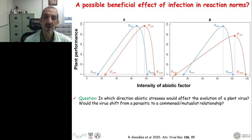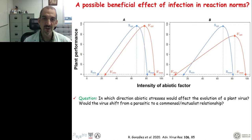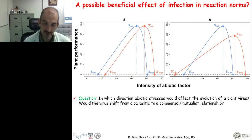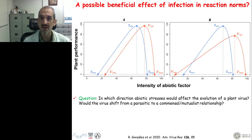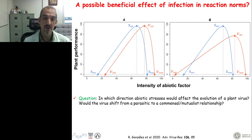That is the conceptual framework we are working within. The scientific question we are posing today is how a change in abiotic conditions — environmental stresses — might affect the evolution of a plant virus. Specifically, will a virus shift from a parasitic to a commensal or mutualistic relationship in response to environmental changes, or will it not respond to such changes? That is the question we are going to address today.